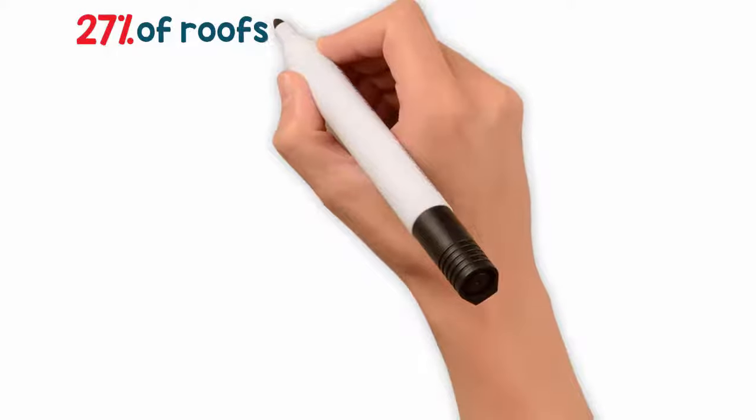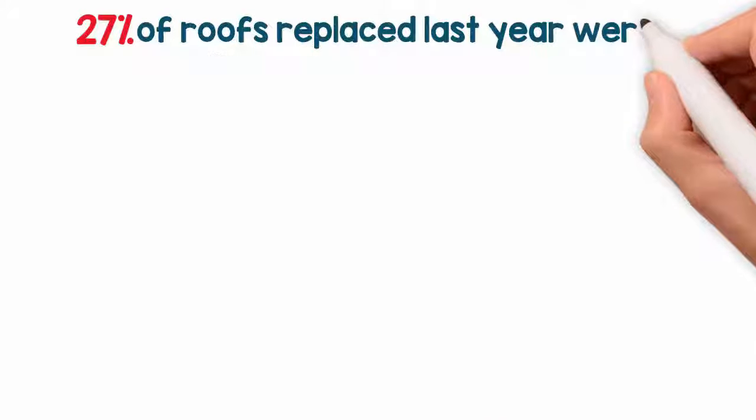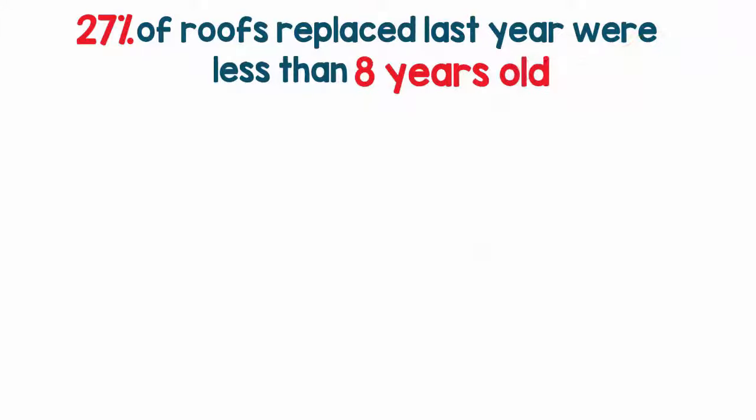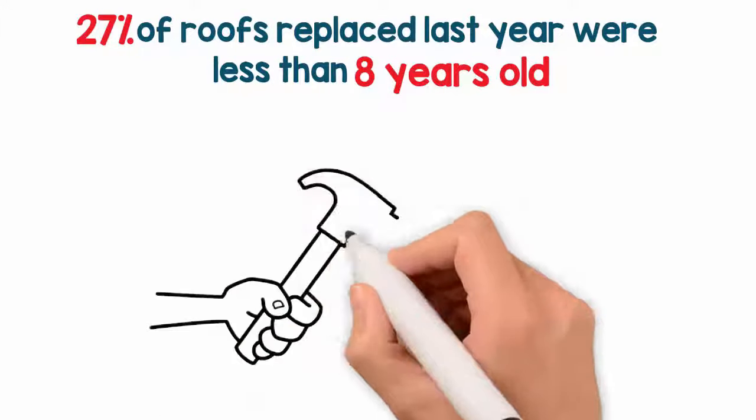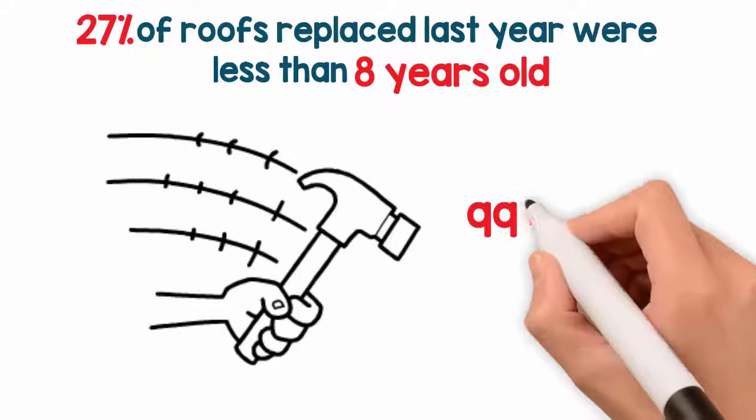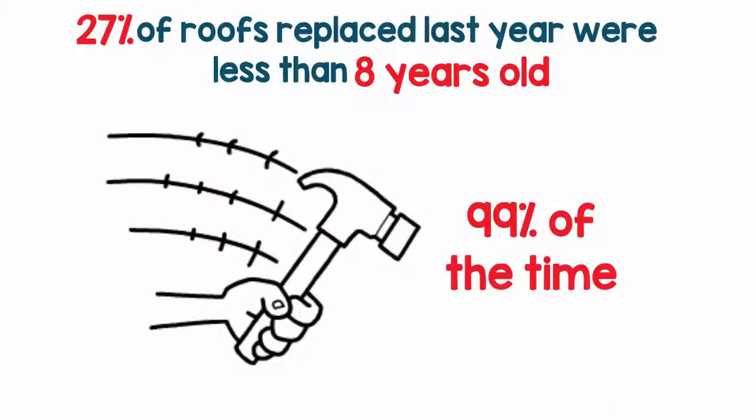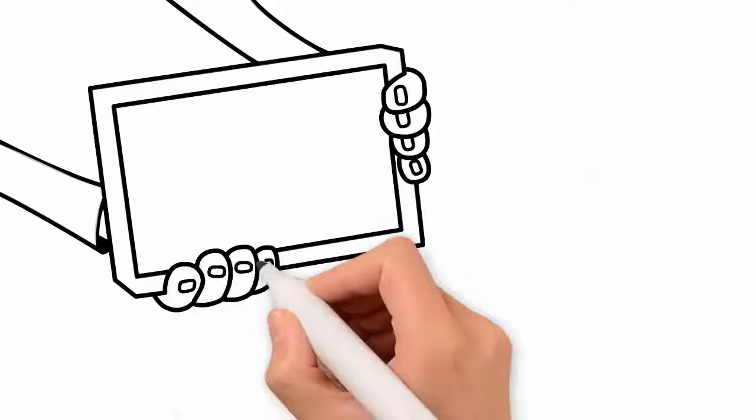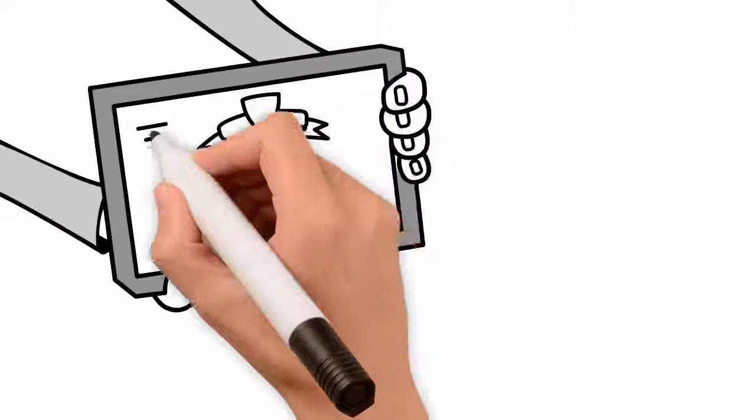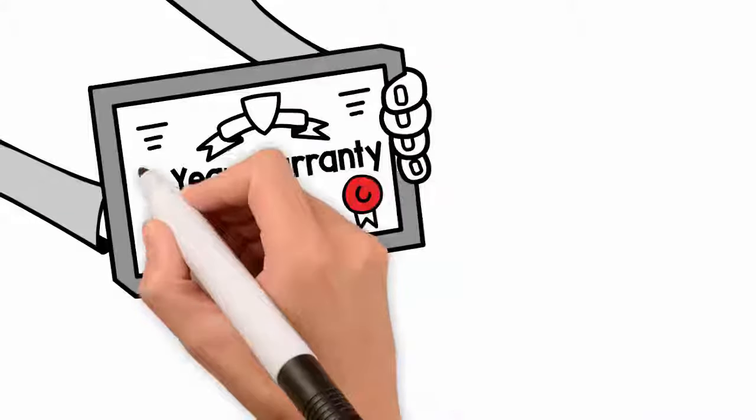Although 27% of the roofs that we replaced last year were less than eight years old, almost none of them were due to material defects. Poor workmanship was to blame 99% of the time. Most roofing contractors only warranty their workmanship for two to five years, not very reassuring.